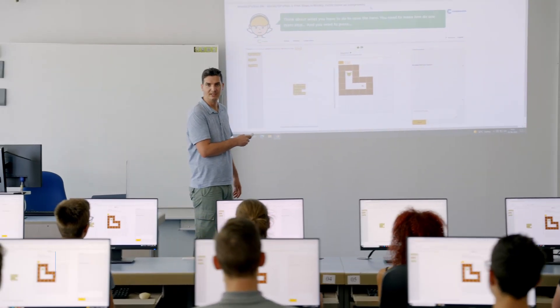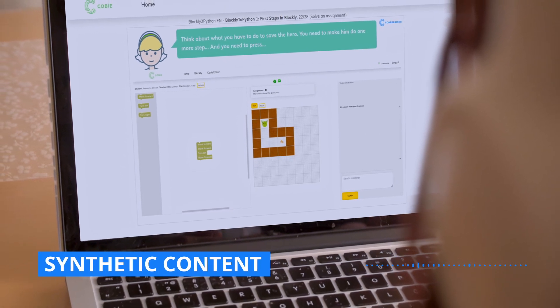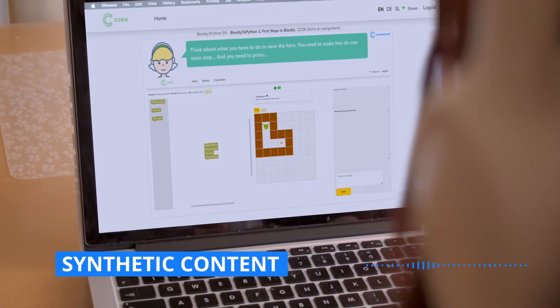Let's listen to Kobi. Think about what you have to do to save the hero. You need to make him do one more step, and you need to press.